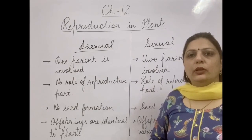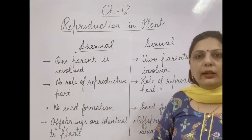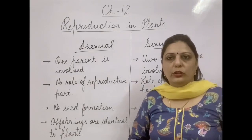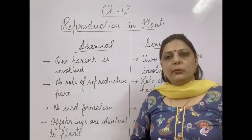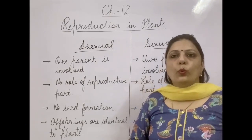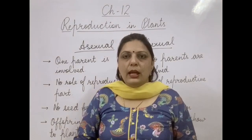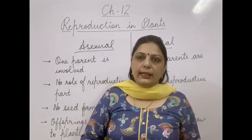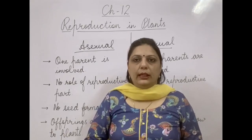Vegetative parts are present in all plants, but not all plants have a reproductive part. This is why some plants show both asexual and sexual reproduction, some plants show only asexual reproduction, and some plants show only sexual reproduction. So I hope it is now clear what reproduction is, what the two main types are, and how you can differentiate between asexual and sexual reproduction. In the next topics we will be reading about both types in detail.